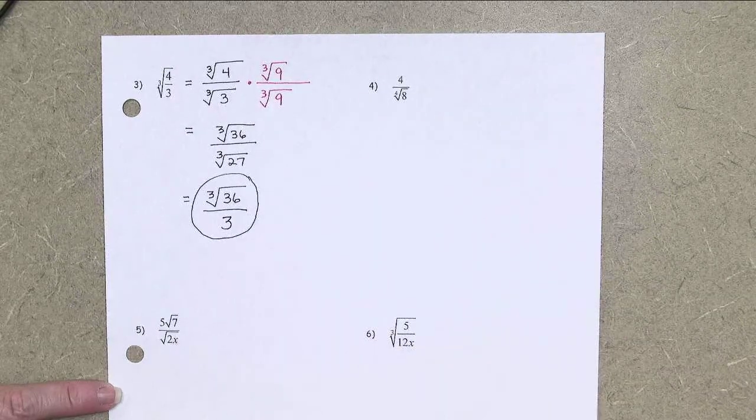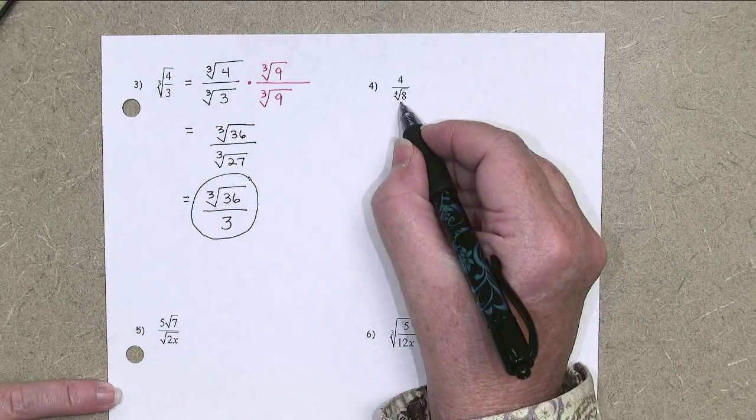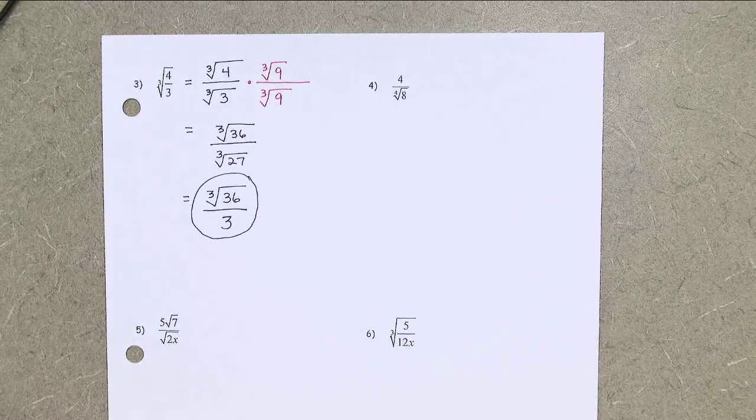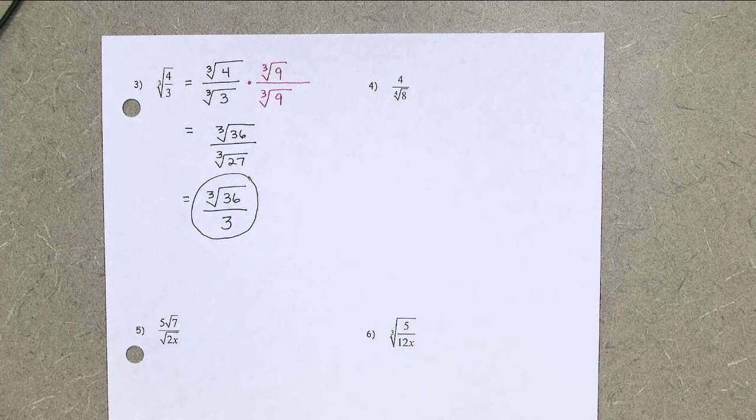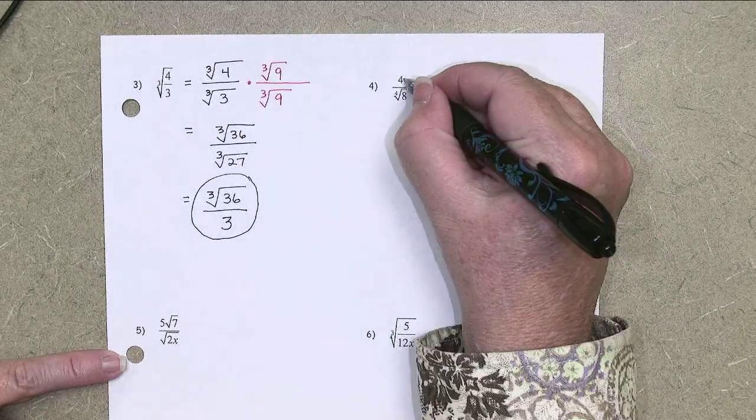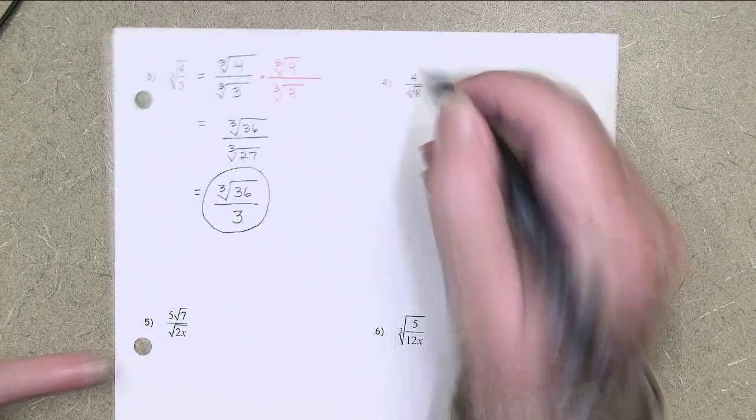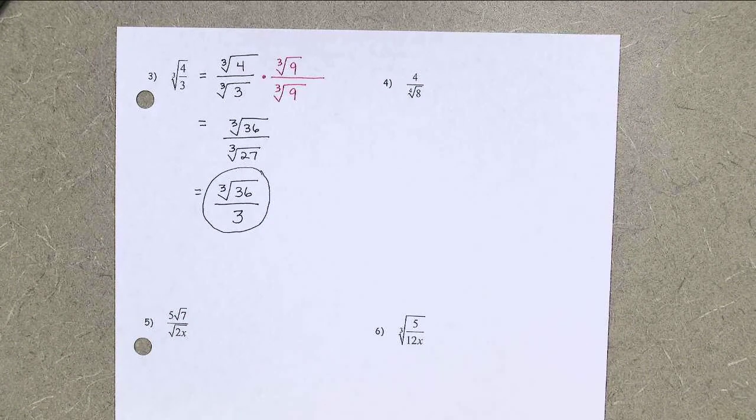In number 4, we have a 4th root in our denominator. The numerator is just a whole number, 4. It's not under a radical. So again, notice, can't do any reducing here. That's not in a radical. That is in a radical. I cannot reduce that fraction.